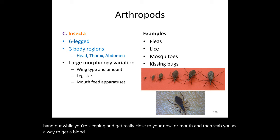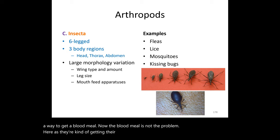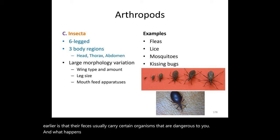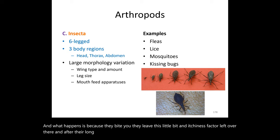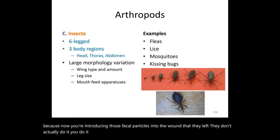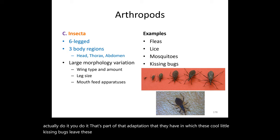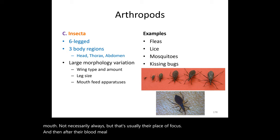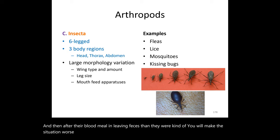The blood meal itself isn't the primary problem with kissing bugs. Similar to dust mites, their feces carry dangerous organisms. They bite you, leave itchiness, then depart — and when you scratch the bite, you introduce those fecal particles into the wound yourself. The bugs don't directly infect you; you do it through scratching. They typically bite closest to the mouth area.